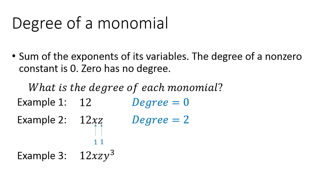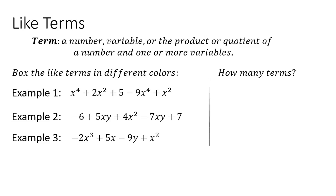In example 3, we have 12xyz cubed, so we're going to be looking at the variables x, z, and y cubed. The exponent on x is 1, the exponent on z is 1, and the exponent on y is 3. So we're going to be adding 1 plus 1 plus 3, so the degree of that monomial is going to be 5. Next we're going to be looking at like terms.